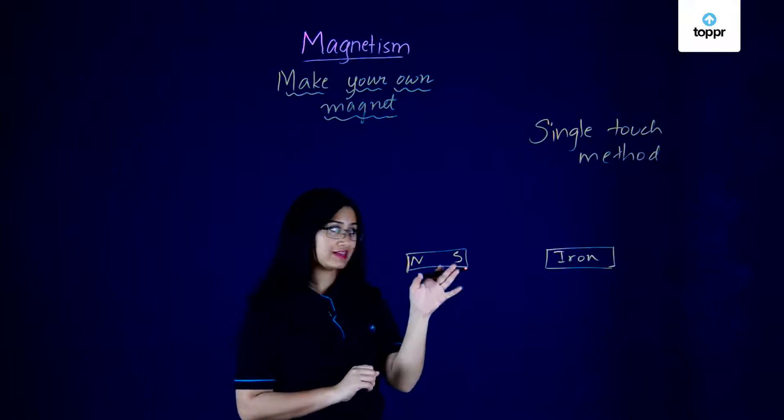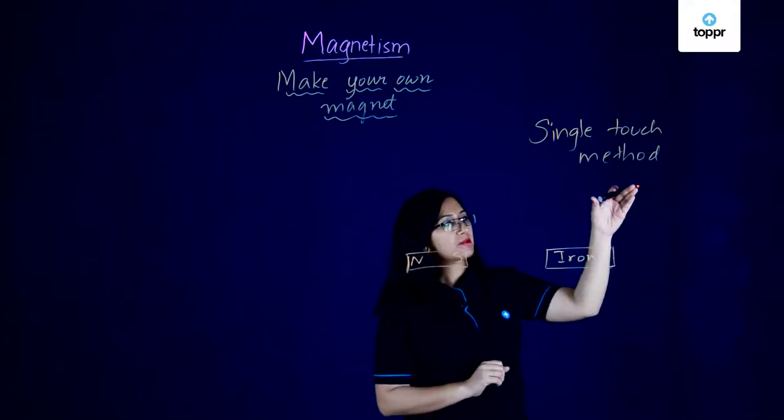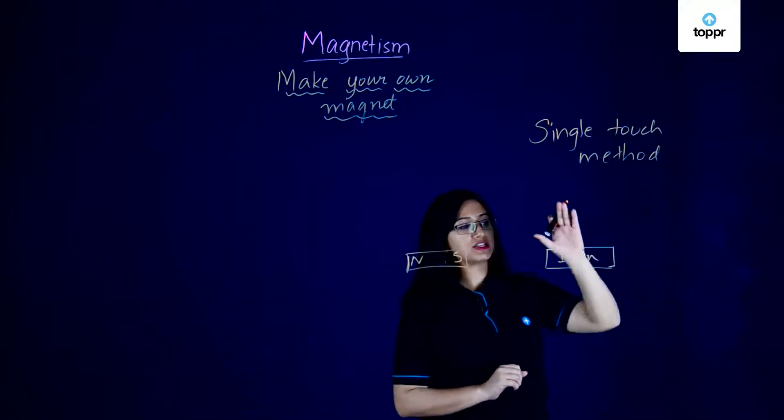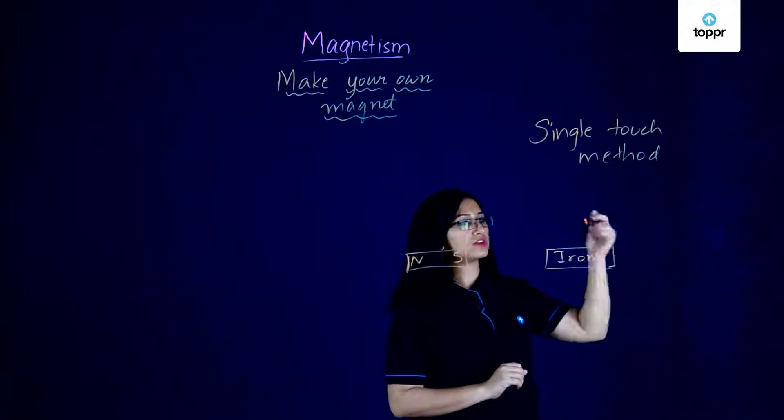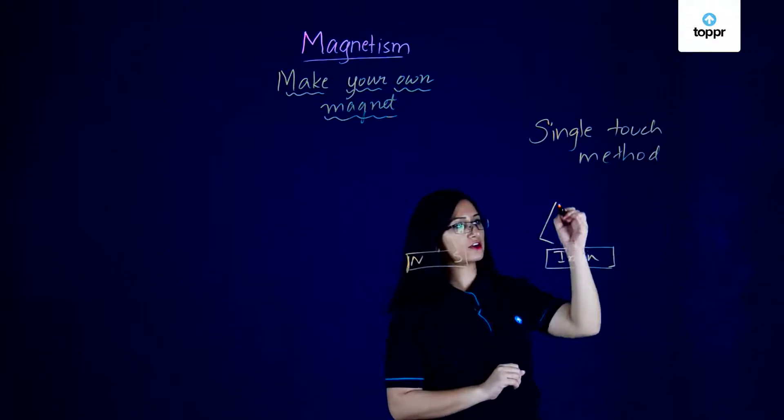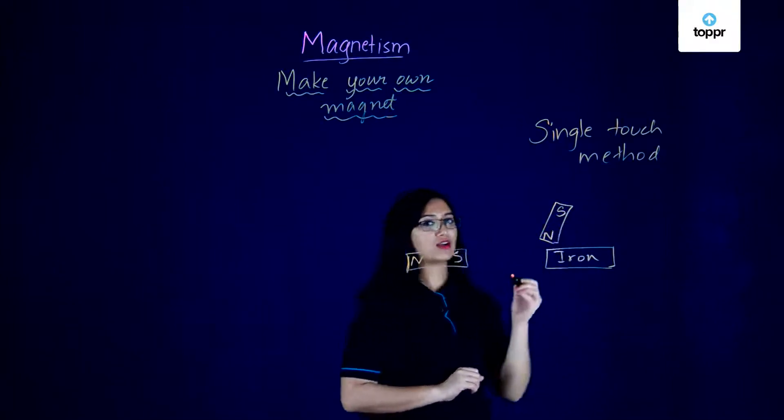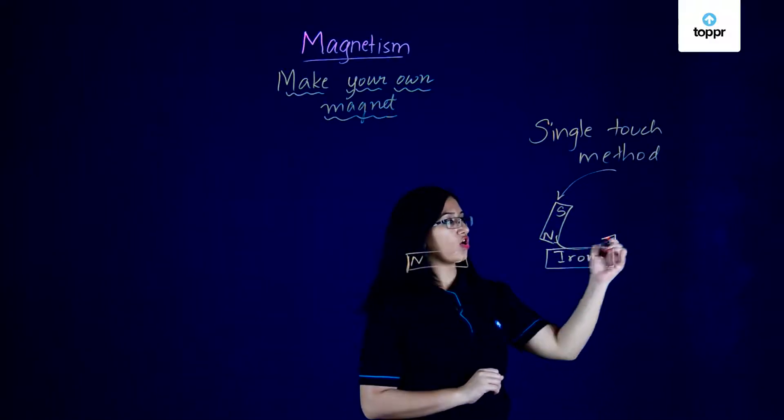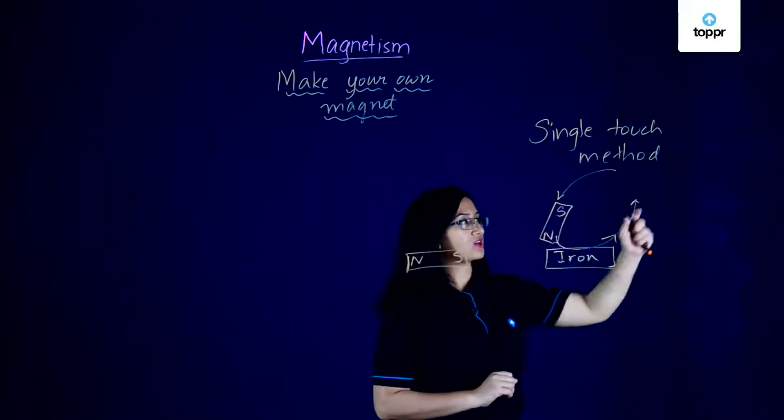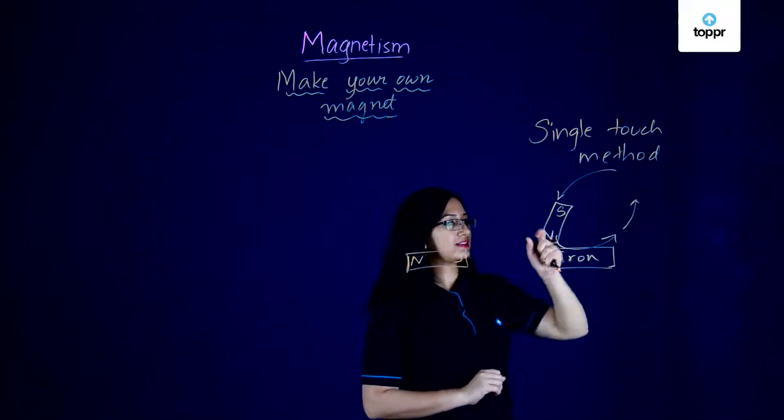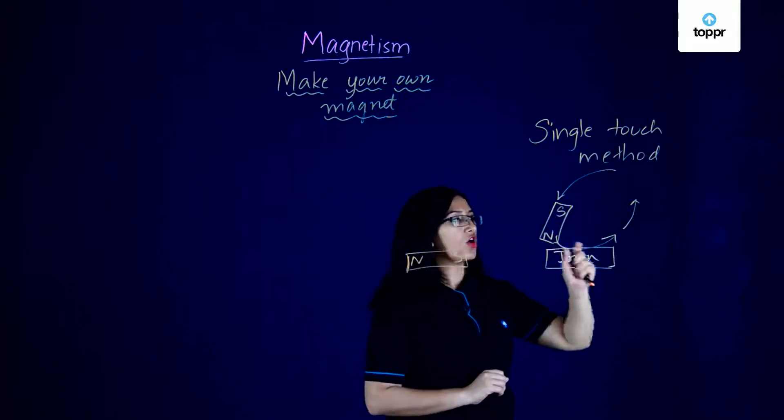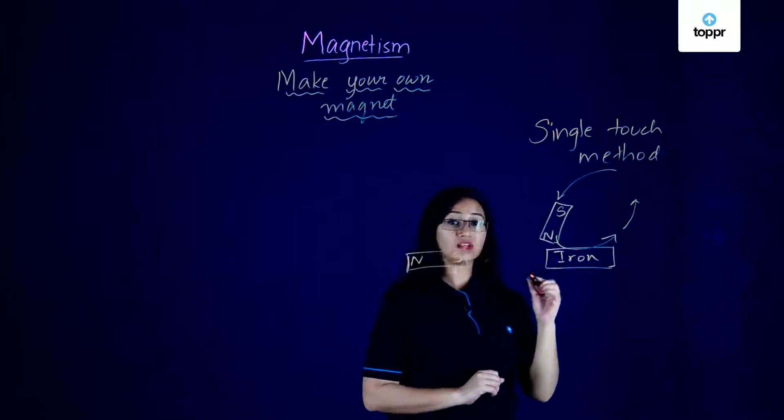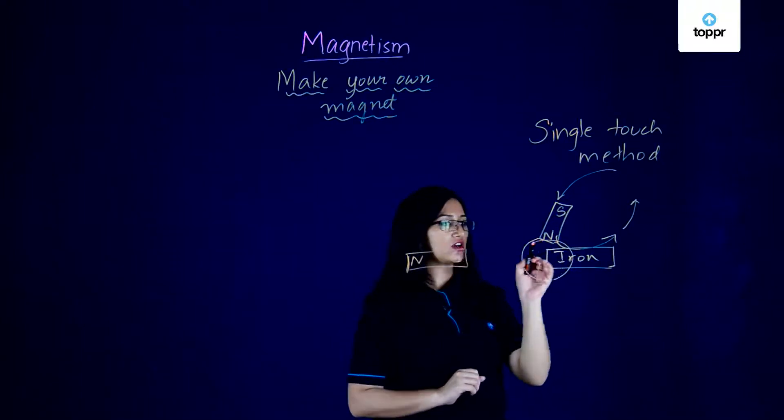So you take the permanent magnet and you simply rub it or stroke it against the iron or the substance that you want to magnetize in one direction. So you start over here on one end, let's say we have north and south like this. So you move it in this direction across the top and pull it out like this. So you keep rubbing it on the top like this while stroking the iron or the substance that you want to magnetize.